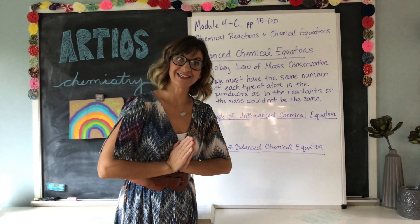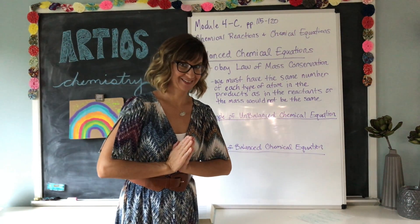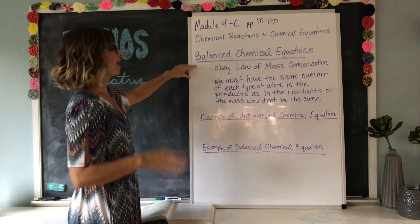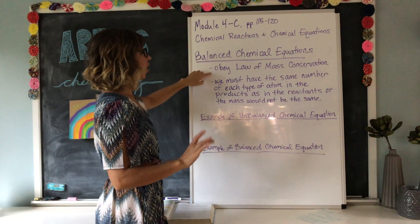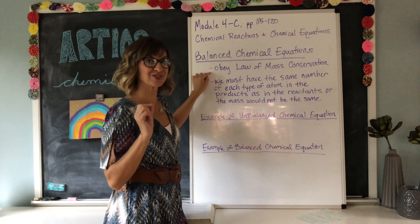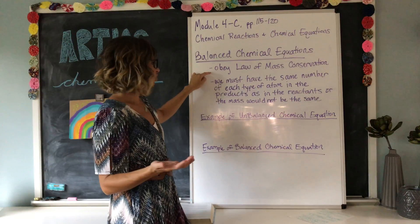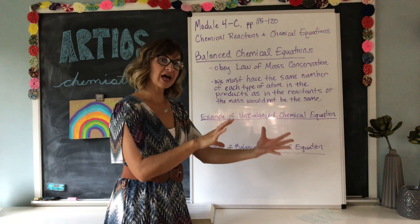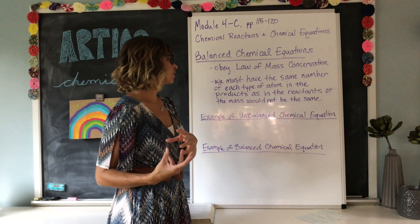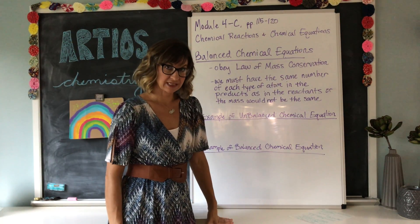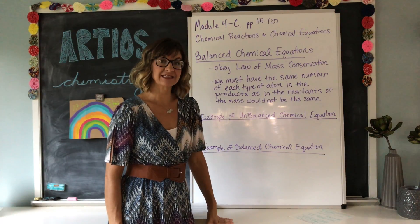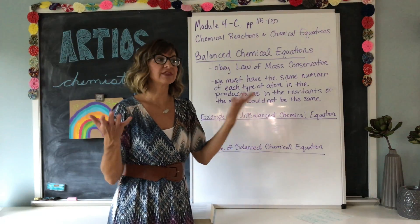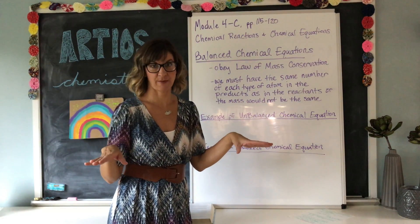Balancing chemical equations — what we've all been waiting for. A balanced chemical equation obeys the law of mass conservation. We must have the same number of each type of atom in the products as we started with in the reactants, or the mass would not be the same. We know that the mass needs to remain the same before and after the chemical change occurs. Even the slightest change in mass does not happen.